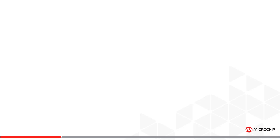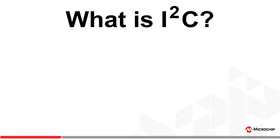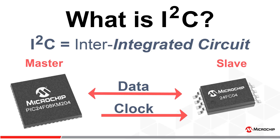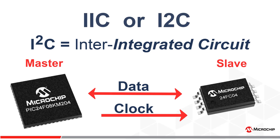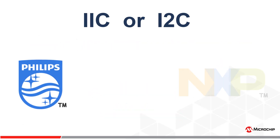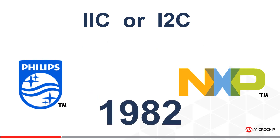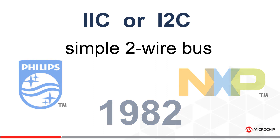Hello and welcome again to Microchip's memory technology series. So what is I2C? I2C is an acronym for inter-integrated circuit. It can also be referred to as IIC or I squared C. I2C was created by Philips, now NXP, back in 1982 as a simple serial bus for their various TTL integrated circuits or ICs.